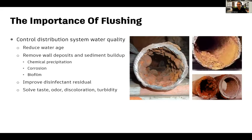Why do utilities need to use flushing as a tool? It's primarily for water quality, which covers many things — from water age to removing deposits and sediment buildup from chemical precipitation, corrosion, and biological biofilm. Another benefit is improving disinfectant residuals: in areas with stagnant water and low residual, flushing brings fresh water in to increase chlorine residuals. Flushing can also help utilities solve taste, odor, discoloring, and turbidity problems.